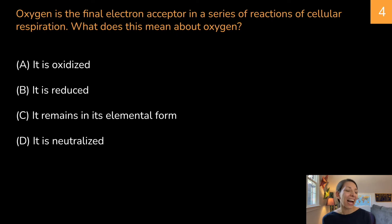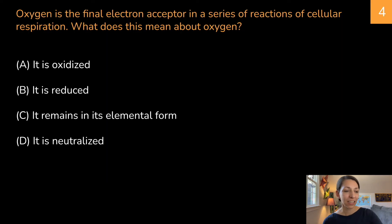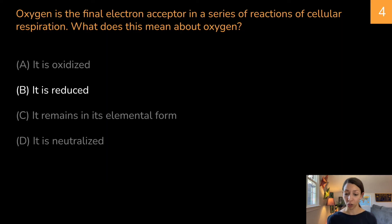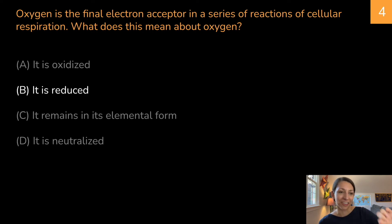Oxygen is the final electron acceptor in a series of reactions of cellular respiration. What does this mean about oxygen? A: it is oxidized. B: it is reduced. C: it remains in its elemental form. D: it is neutralized. The correct answer is B — it is reduced. In cellular respiration, oxygen serves as the final electron acceptor, which means it takes electrons and becomes reduced. Remember LEO-GER: loss of electrons is oxidation, gain of electrons is reduction — or OIL RIG, whichever way you want to remember it.